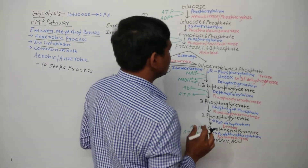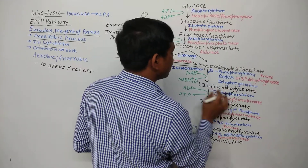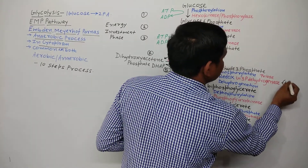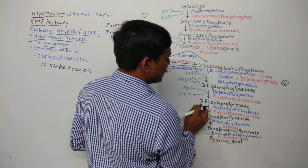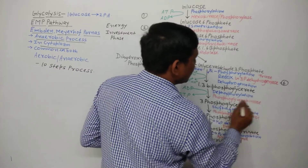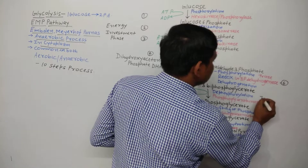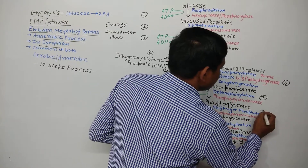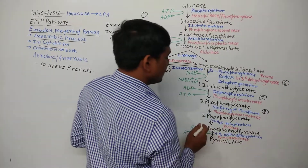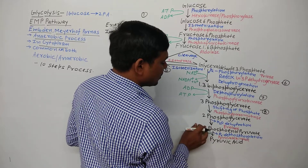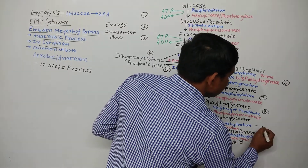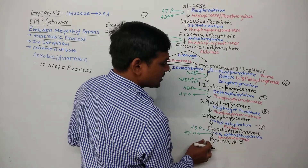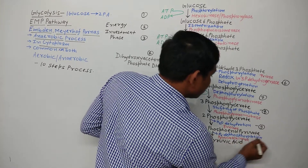Now the last five steps. Glyceraldehyde 3-phosphate is converted to 1,3-bisphosphoglycerate — this is step 6. Then to 3-phosphoglycerate — step 7. And continuing forward through steps 8, 9, and 10, finally pyruvate is formed — this is step 10.